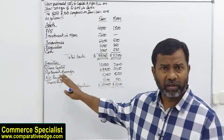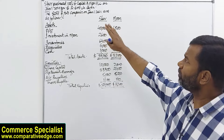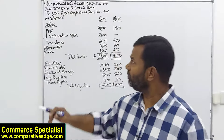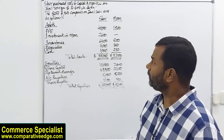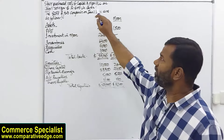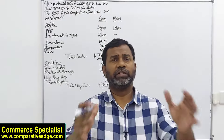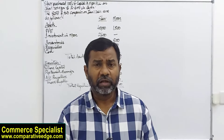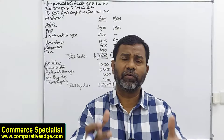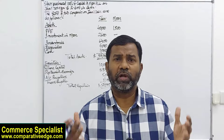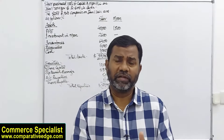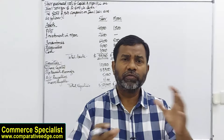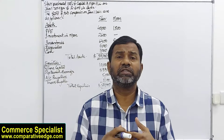Here we have a simple question where Star purchased 100 percent share capital of Moon PLC. Star company is buying all the shares of Moon company on January 1st, 2021 for 2.6 million cash. The statement of financial position for both companies immediately after acquisition is shown here. Because the parent has purchased 100 percent share capital of the subsidiary, effectively it's one group — one entity. So IFRS 10 requires us to consolidate the results and make one financial statement showing the results of the group.